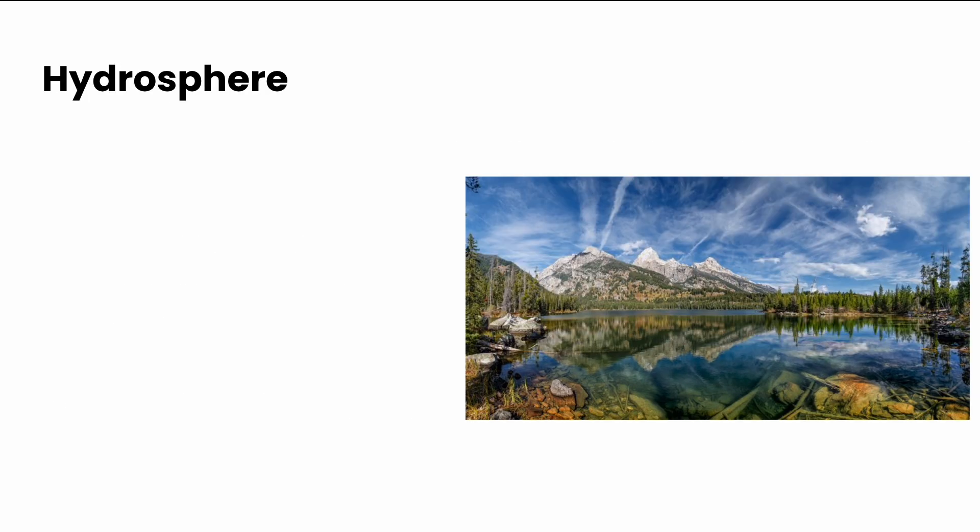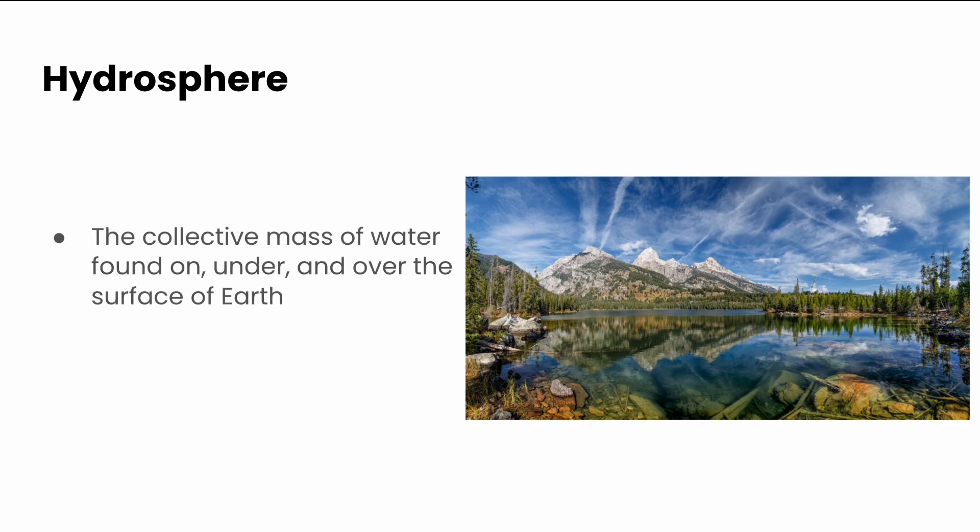The hydrosphere. Remember, hydro means water, so this is any of the parts of this picture that has water. This includes even the clouds in the sky, which are made up of water vapor. Obviously, the lake itself, the water involved in the lake is part of the hydrosphere. And even you can see some of the snow on the caps of the mountains. That would also be considered part of the hydrosphere. Pretty much anything that involves water.